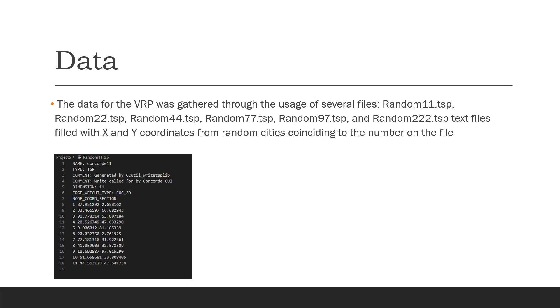For data, the vehicle routing problem data was gathered through the use of several files. Random 11.tsp, Random 22.tsp, Random 44.tsp, Random 77.tsp, Random 97.tsp, and Random 222.tsp text files supplied by Dr. Jampolsky. They are filled with XY coordinates from random cities, and the amount of cities coincides to the number in the name of the file. Here's an example of random 11. The top seven lines are just headers, so for my reading code I had it skip over the first seven lines and get to the meat and potatoes, which are the nodes and their XY coordinates. The node names are on the far left, X in the middle, and Y being the third number in each row.